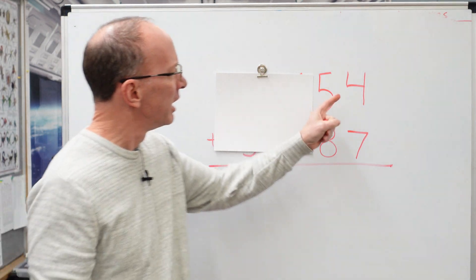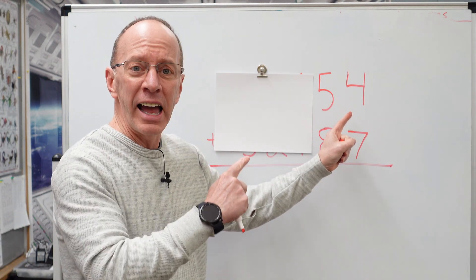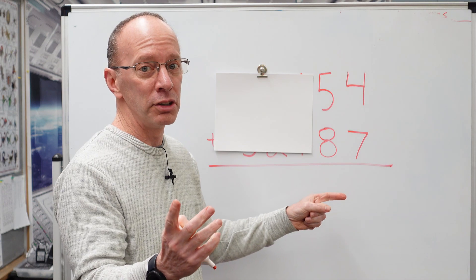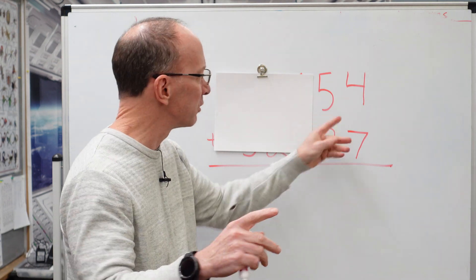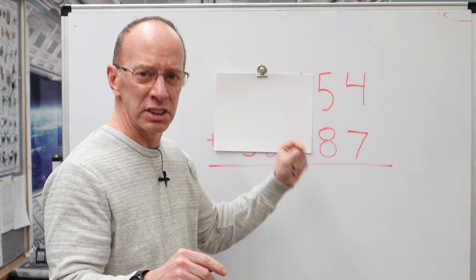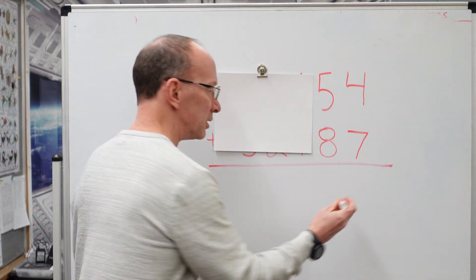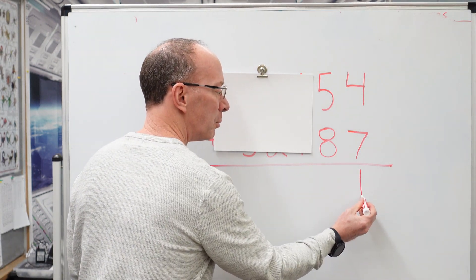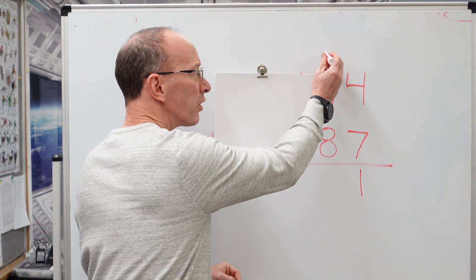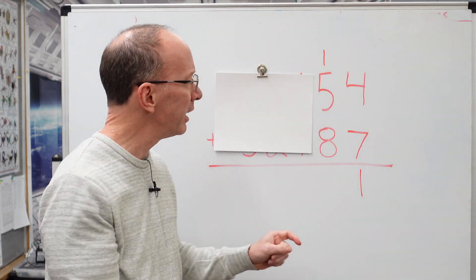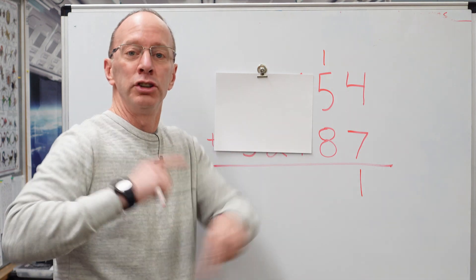All right. First of all, add the ones. We might have to do some regrouping, but let's take care of this first step. Seven plus four, seven, eight, nine, ten, eleven. All right. We have two ones. Eleven. Put the one right up here. Don't forget this one right there. Okay. Ready to add the tens? Let's do it. Yeah.